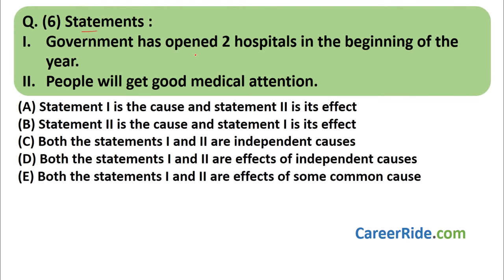Question number six. Statements: (1) Government has opened two hospitals in the beginning of the year. (2) People will get good medical attention. Combining: 'Government has opened two hospitals, so people will get good medical attention' — this makes sense. The reverse — 'People will get good medical attention, so government has opened two hospitals' — may seem to make sense, but pay very close attention: this is extremely important from an exam point of view.